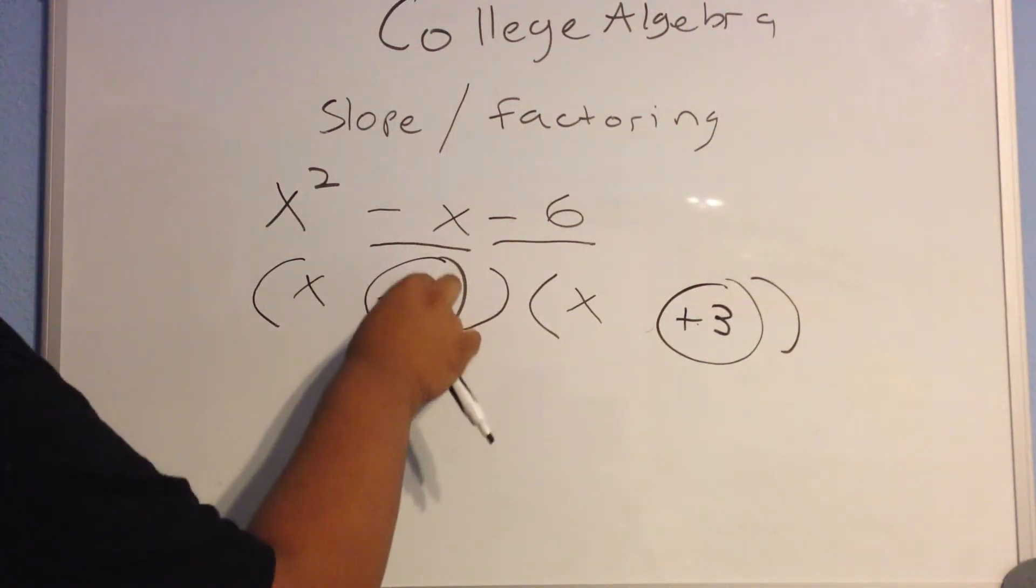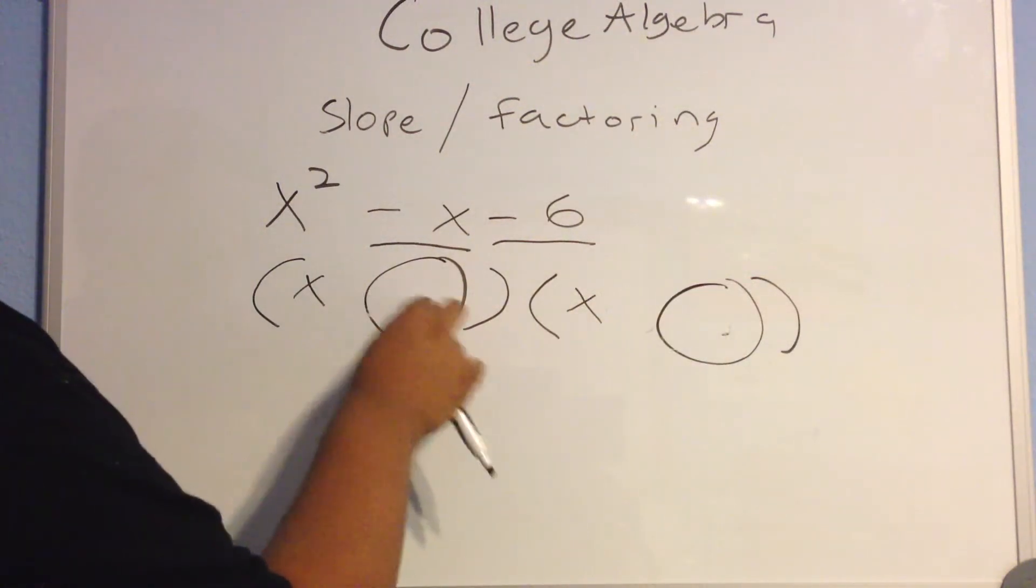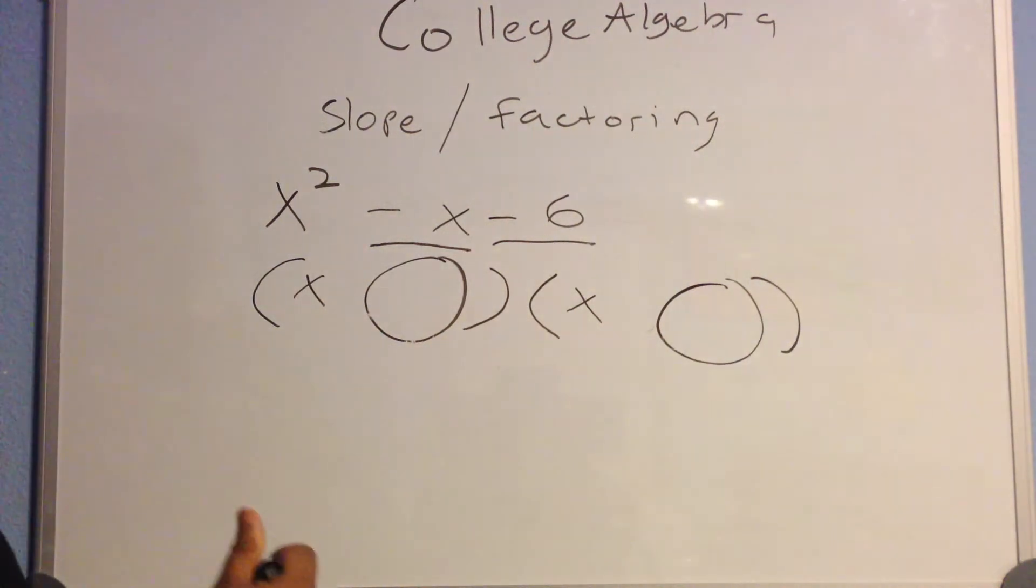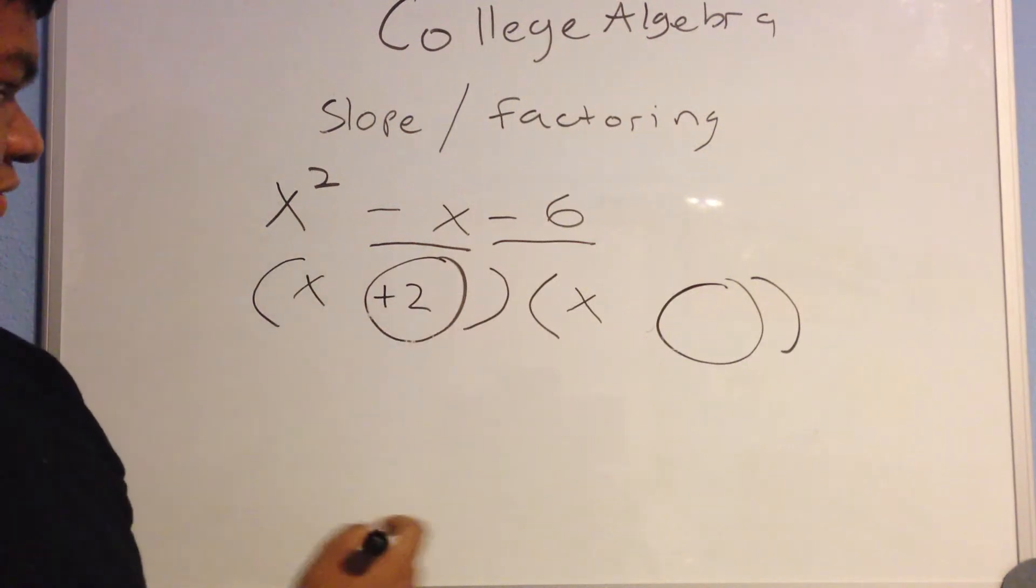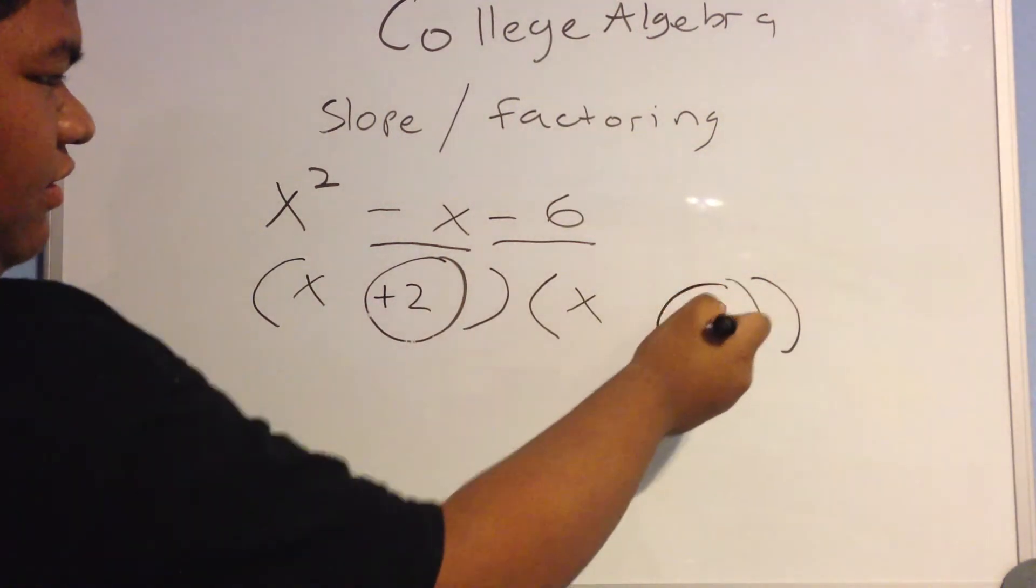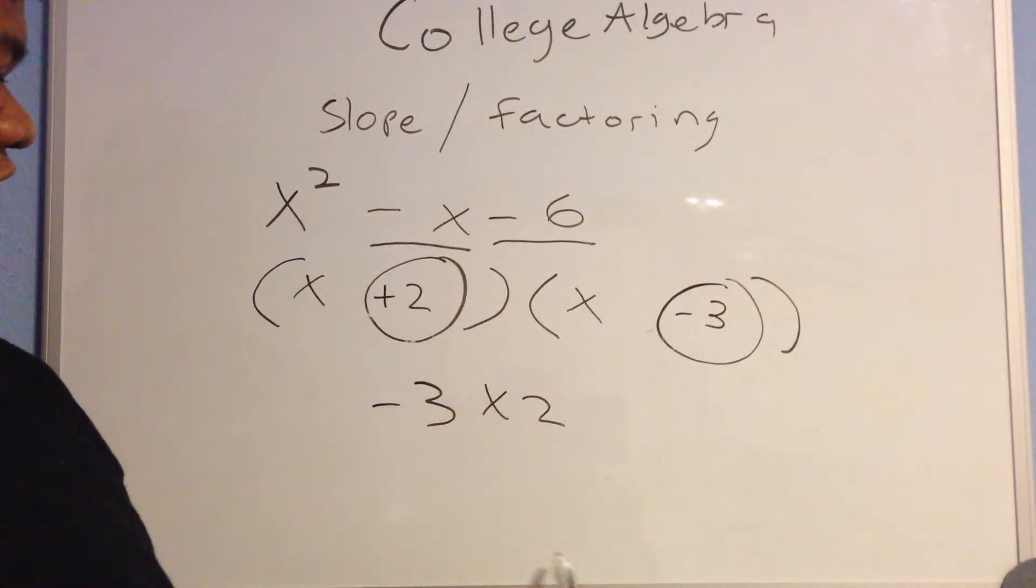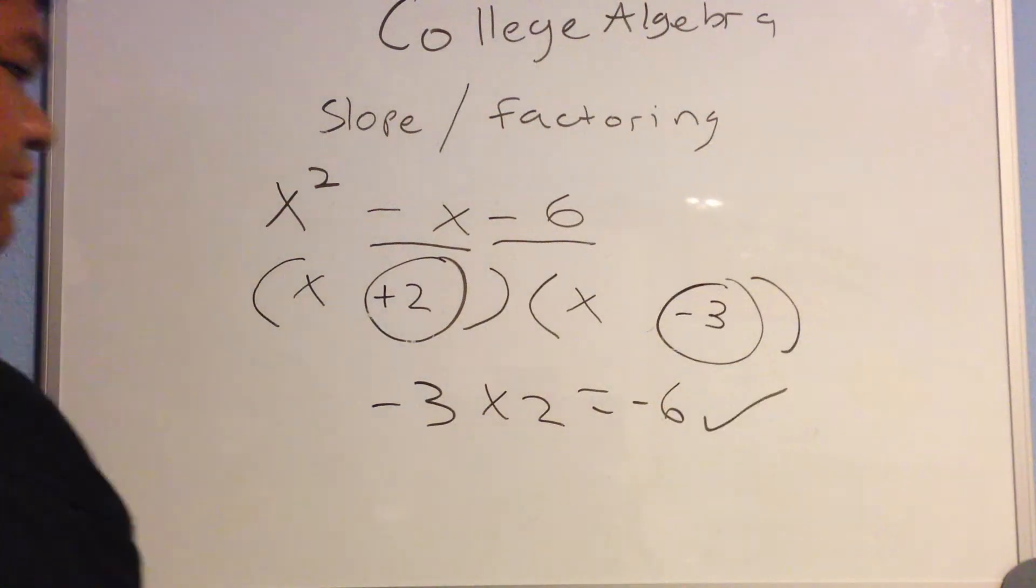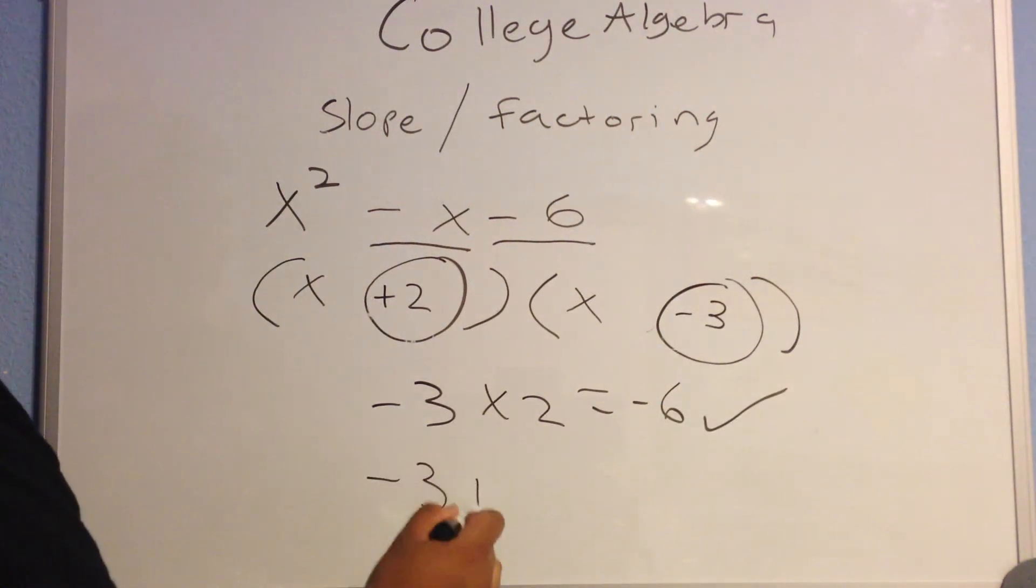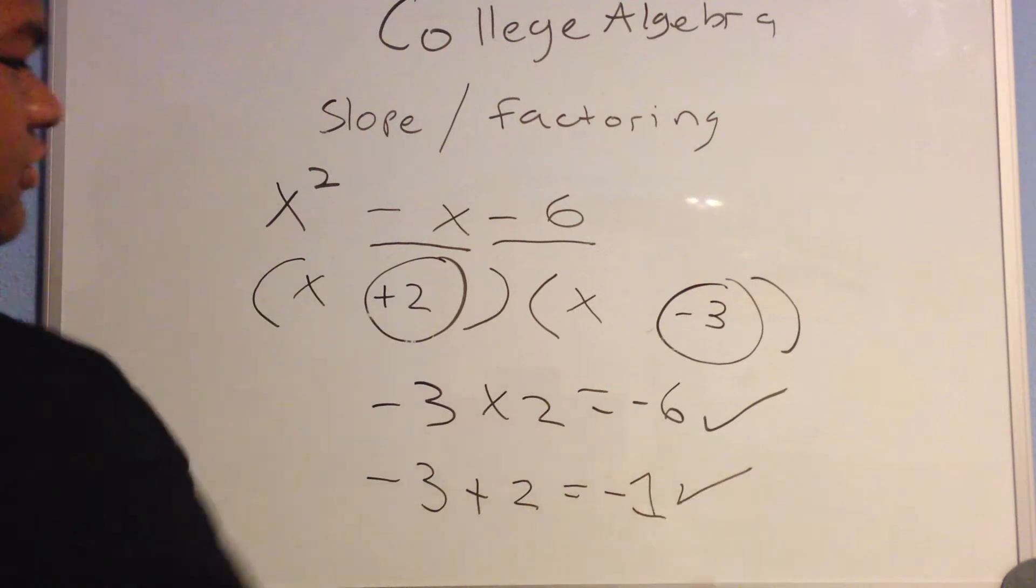This is basically attempting on and on until you get the right one. Eventually, you will get better at this. Let's try the 2 to be positive and the 3 to be negative. Negative 3 times 2, positive 2, equals negative 6. That works out. Now, negative 3 plus positive 2 equals negative 1. That also works out.